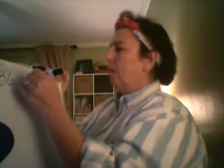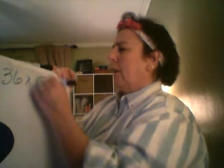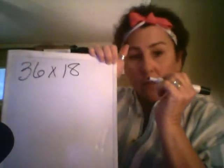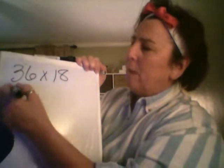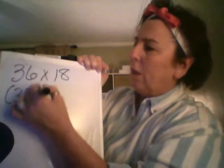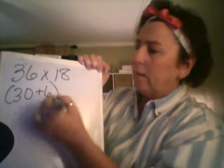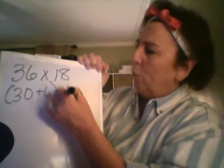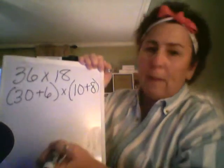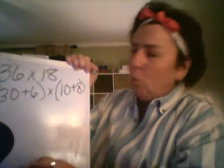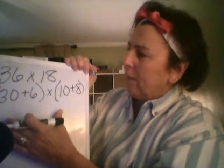Let's do 36 times 18. So when we have 36 times 18, again what the students need to be able to see is that 36 is really 30 plus 6, and they're multiplying it times 10 plus 8, because that's how you break up 18.